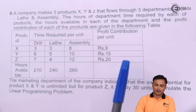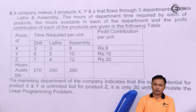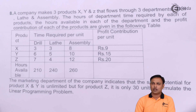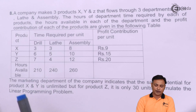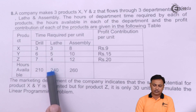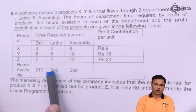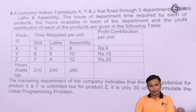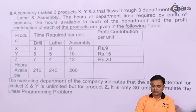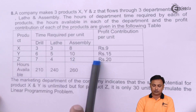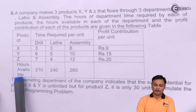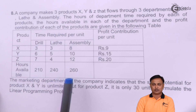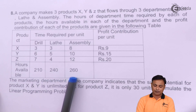We are also given the profit per unit on the right-hand side. Normally we always prefer to write the products in the columns, but in this problem the products are already placed in the rows, so we won't change the structure. Let the table remain as it is. We are also given the time available — the hours available — for each of the three departments: drilling, lath and assembly.